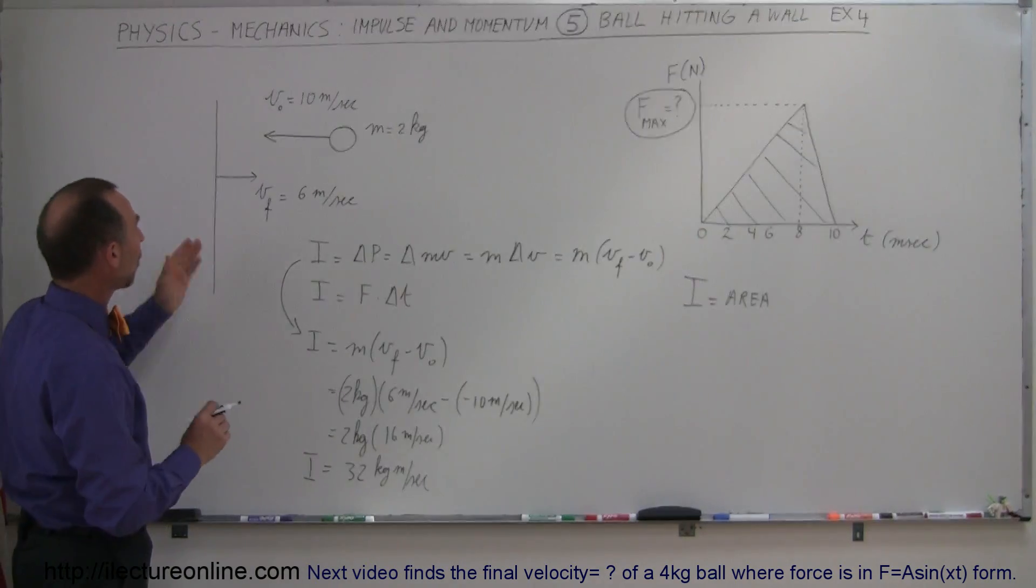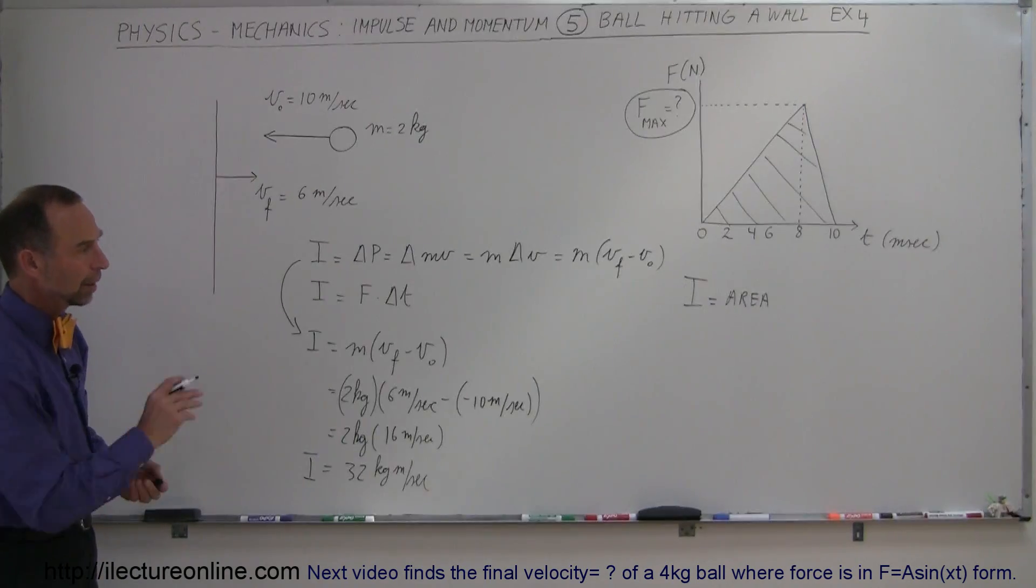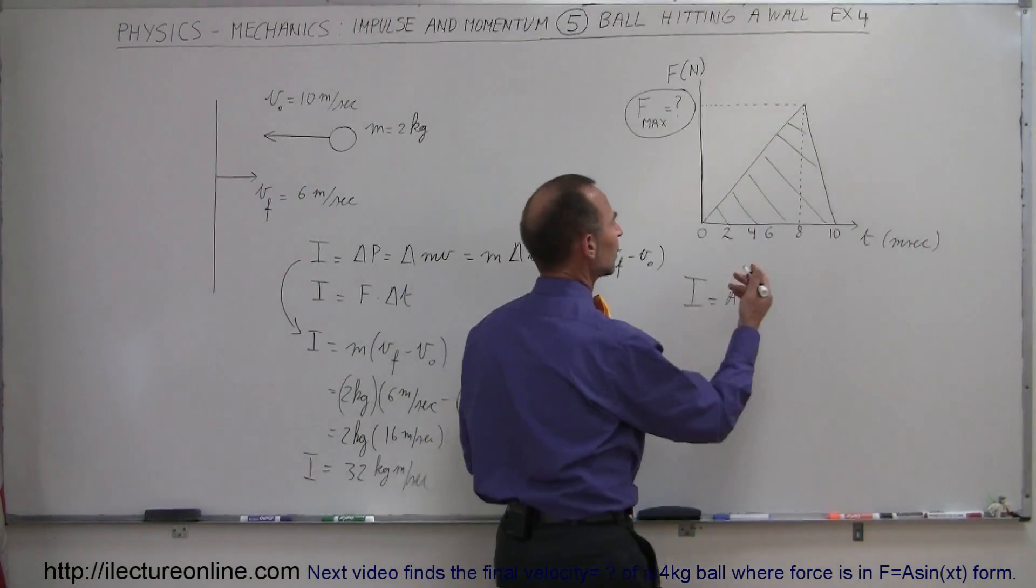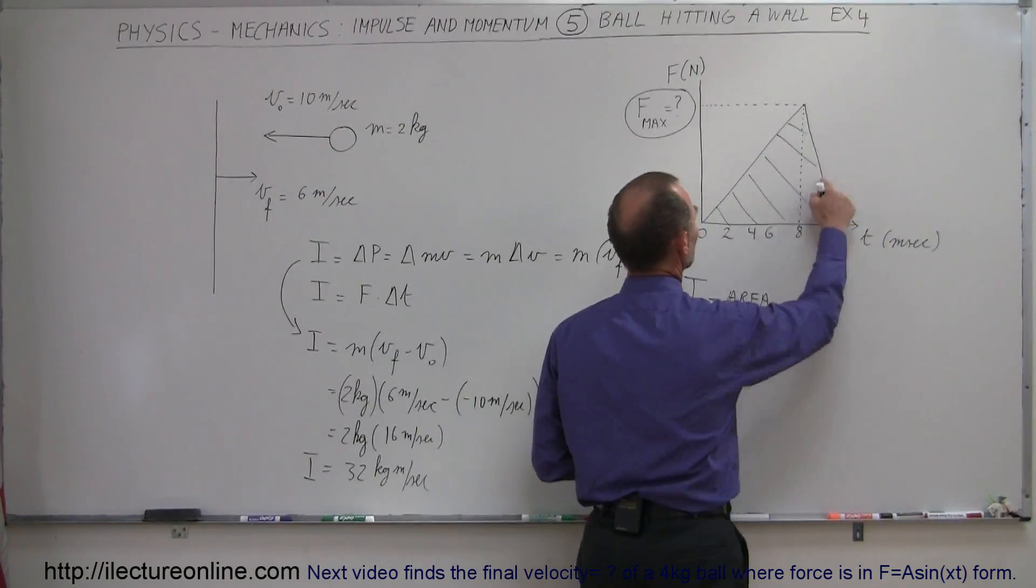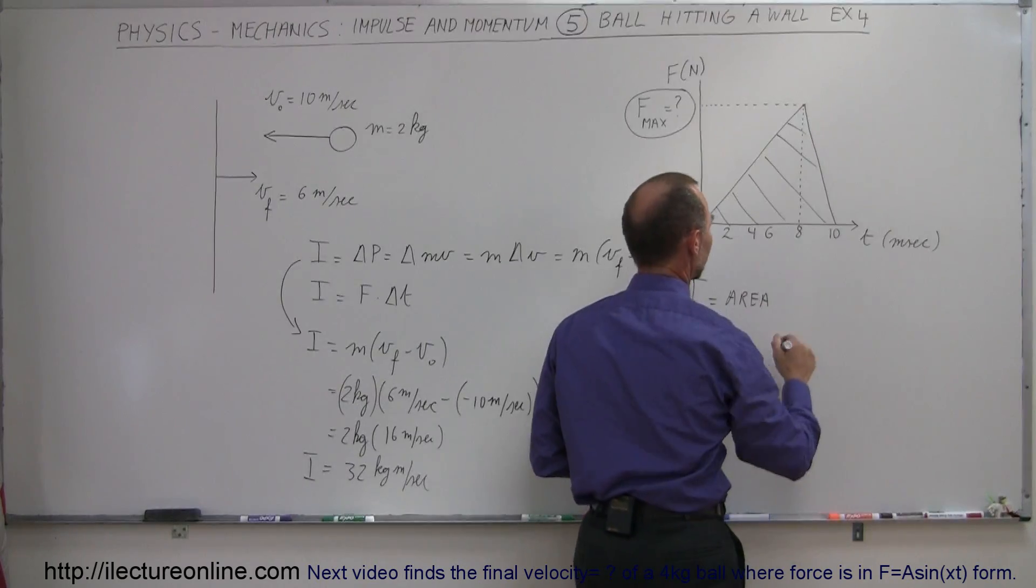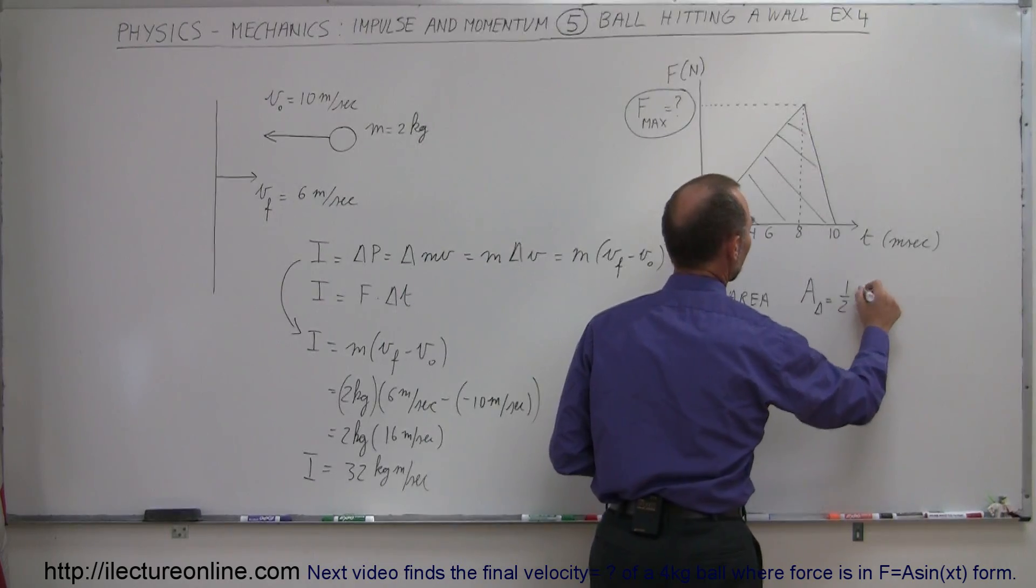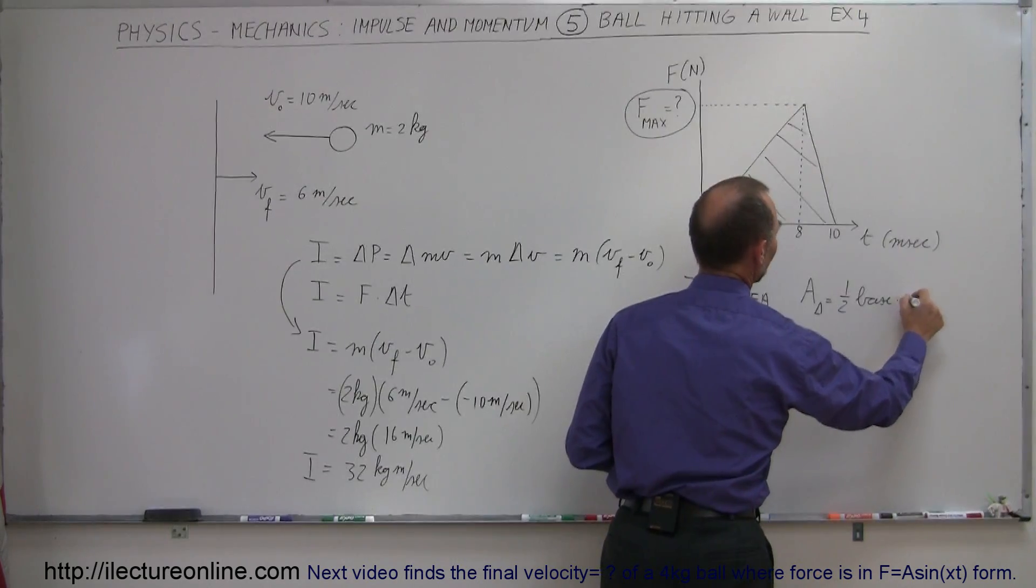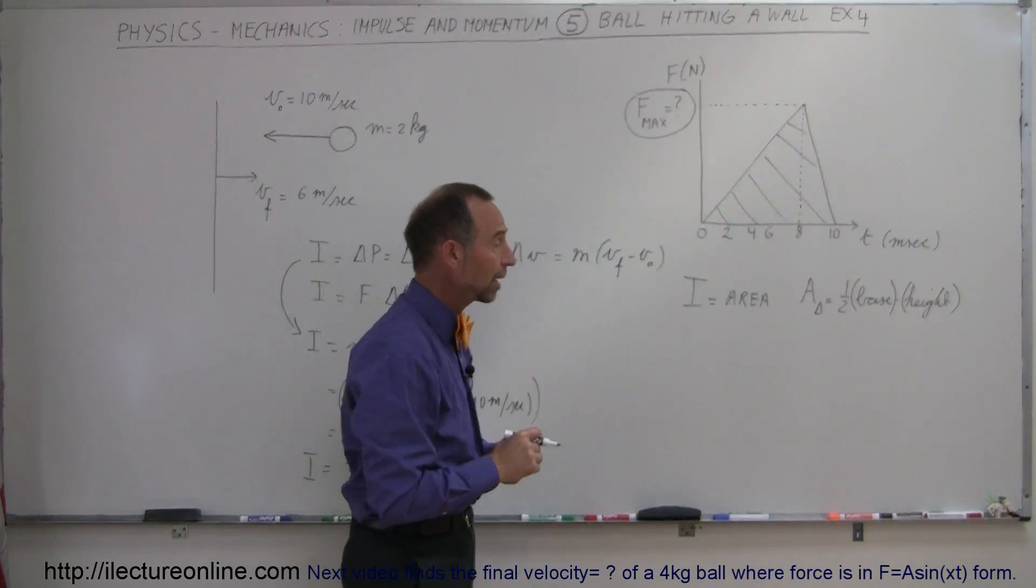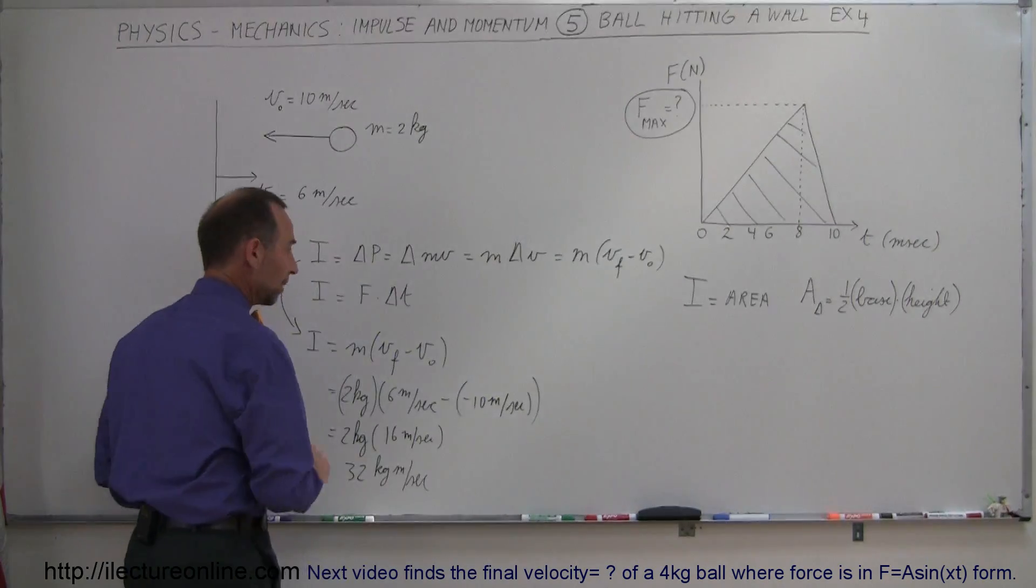Now that should equal to the area underneath the curve, and so somehow we have to find the area of this curve. Now, of course, this is a triangle right here. We have the width of the triangle, and we have the height of the triangle. We know that the area of a triangle is equal to half the base times the height. So the base times the height, times one half, gives you the area underneath the triangle, and that should equal the impulse, which should equal the impulse over here.